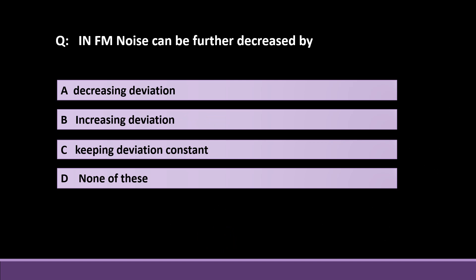The next question is: in FM, noise can be further decreased by — decreasing deviation, increasing deviation, keeping deviation constant, or none of these? We will now discuss what deviation means.